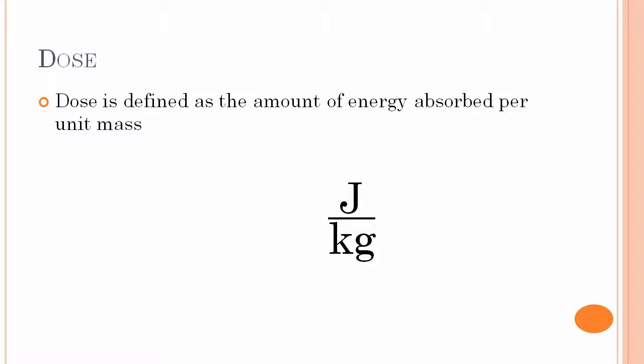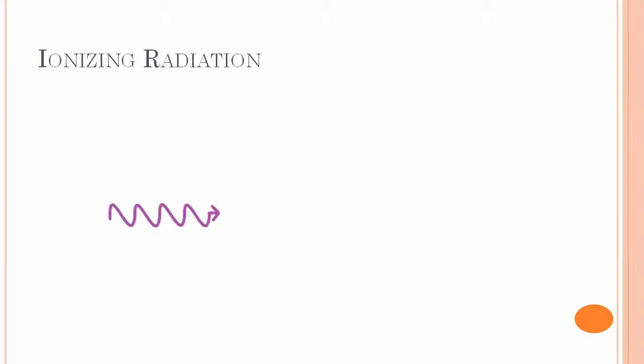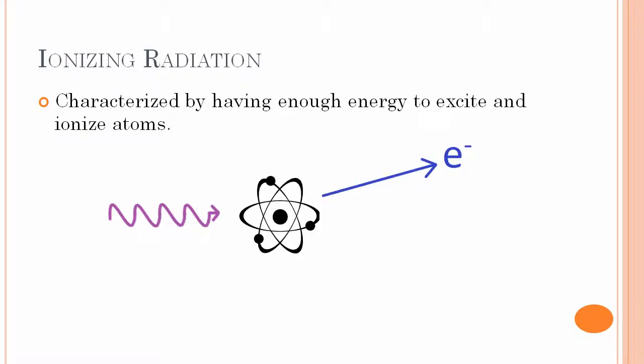When I first came here, I quickly picked up the concept of dose. Dose is defined as the amount of energy absorbed per unit mass, or joules per kilogram, also known as gray.